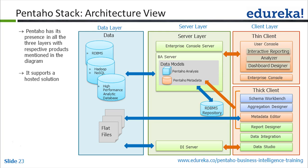Now we'll look at each layer in detail in the following slides. The architecture view shows three layers: the data layer, the server layer, and the client layer. We will see what each individual layer contains.